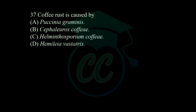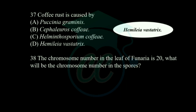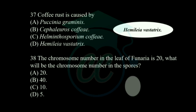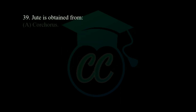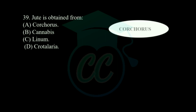Next question: coffee rust is caused by — options: Puccinia graminis, Cephaleuros coffeae, Helminthosporium coffeae, and Hemileia vastatrix. The correct answer is Hemileia vastatrix. Next question: the chromosome number in the leaf of Funaria is 20; what will be the chromosome number in the spores? Options: 20, 40, 10, or 5. The chromosome number in the leaf of Funaria is 20 and the chromosome number in the spore will also be 20.